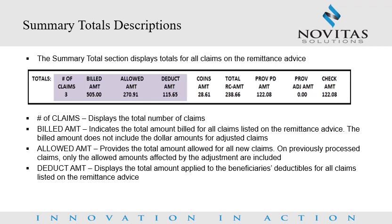Summary totals descriptions. The summary totals section displays totals for all claims on the remittance advice. Number of claims displays the total number of claims listed. Billed amount indicates the total amount billed for all claims, but does not include dollar amounts for adjusted claims. Allowed amount provides the total amount allowed for all new claims; on previously processed claims, only the allowed amounts affected by the adjustment are included. Deductible amount displays the total amount applied to the beneficiary's deductibles for all claims listed.